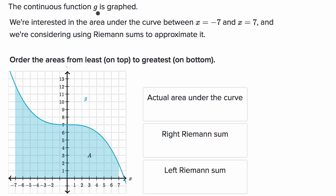The continuous function g is graphed. We're interested in the area under the curve between x equals negative seven and x equals seven, and we're considering using Riemann sums to approximate it.